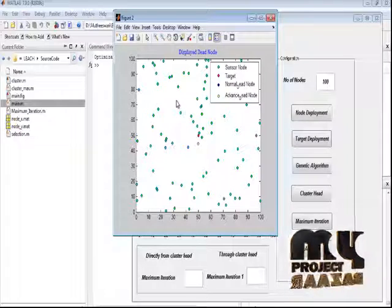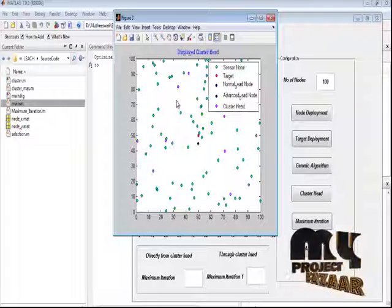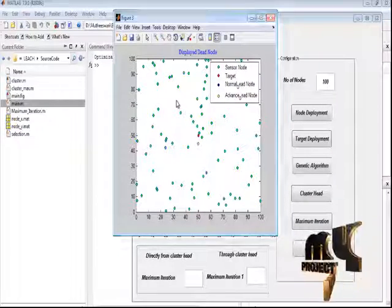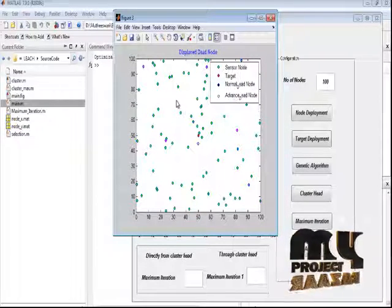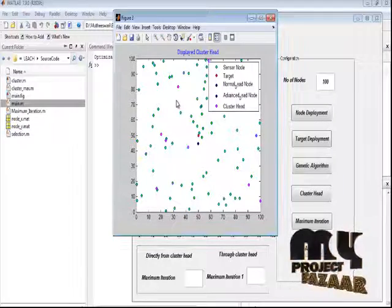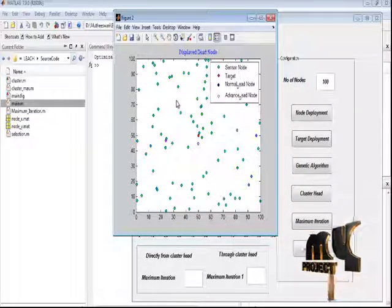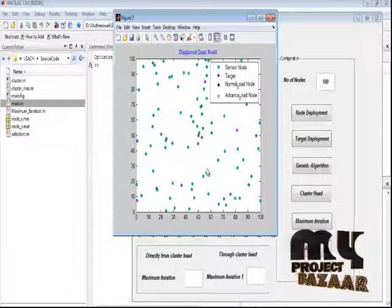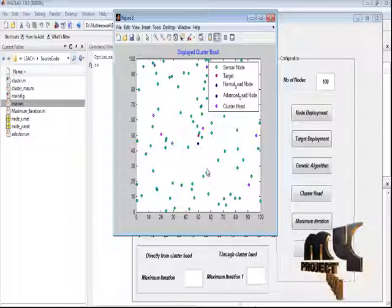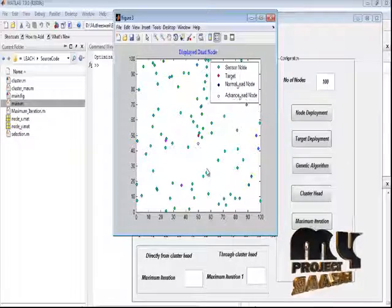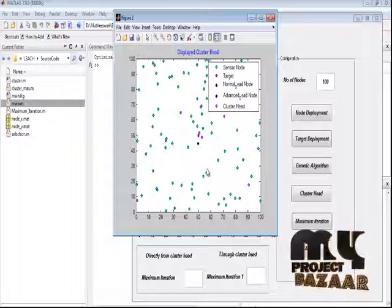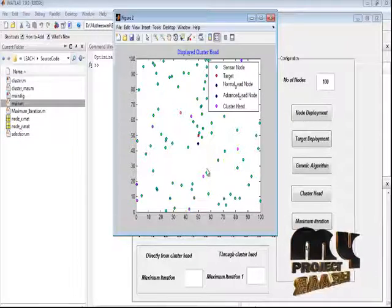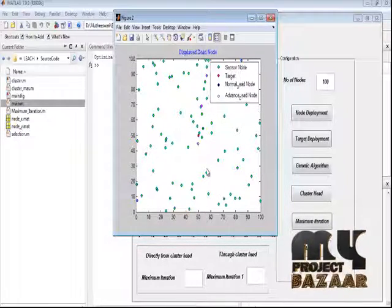Here every cluster head will be performed, and every cluster head collects the data from the member nodes and transforms the data to the target which we have mentioned. This process will be repeated for the maximum number of rounds, and every round the dead node among normal nodes will be identified.